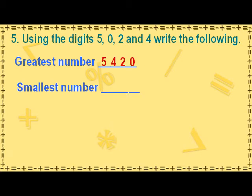To find the smallest number, we place the smallest non-zero digit 2 in the thousands place, followed by 0 in the hundreds place, then 4 in the tens place, and lastly the digit 5 in the ones place. In this way, we get the smallest number formed as 2045. Note that we cannot begin the number with 0 on the left-hand side, as 0 will have no value there.